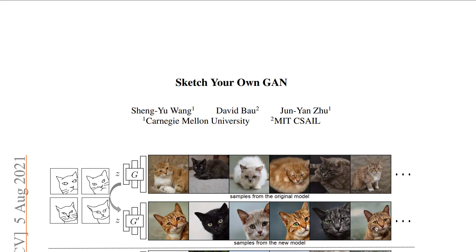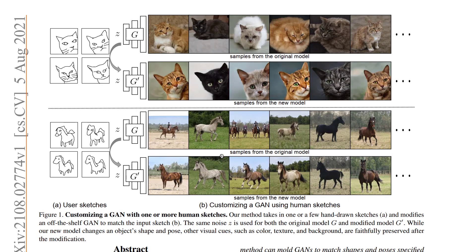Welcome to the Sketch Your Own GAN paper walkthrough. This paper is by Shenyu Wang, David Bao, and Jung Yang Zu. In this paper, the authors show how with as few as just one sample we are able to modify the output of a GAN. If you're new to GANs, you could check out our previous videos on GANs to understand everything we'll cover here.